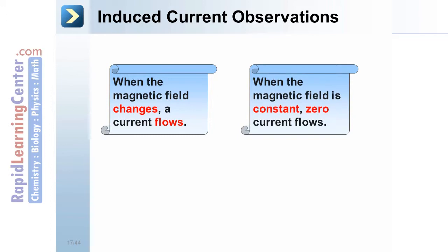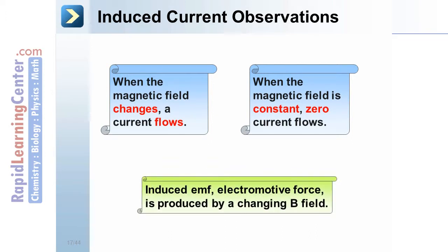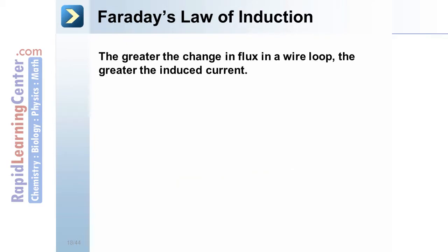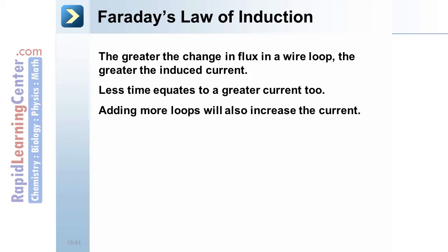Induced current observations. Induced EMF, or electromotive force, is produced by a changing magnetic field. Faraday's Law of Induction: the greater the change in flux in a wire loop, the greater the induced current. Also, less time equates to a greater current, and more loops will also increase the current.